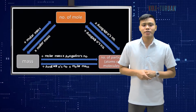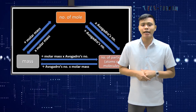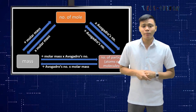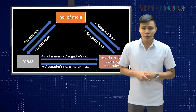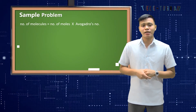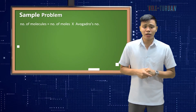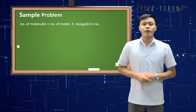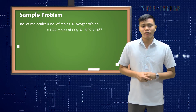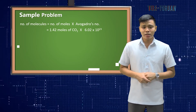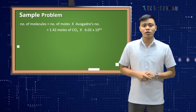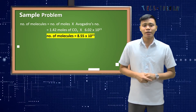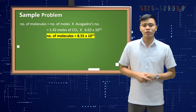The other method for solving this problem uses the diagram presented earlier. This problem requires us to convert number of moles to number of molecules. The formula is: number of molecules equals number of moles times Avogadro's number. So 1.42 moles of carbon dioxide times 6.02 × 10²³ gives a final answer of 8.55 × 10²³ molecules of carbon dioxide.